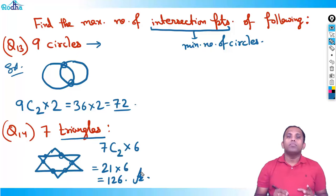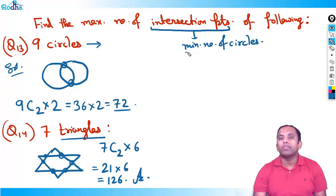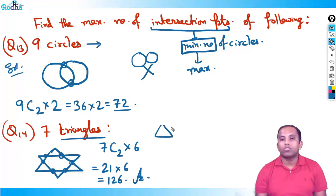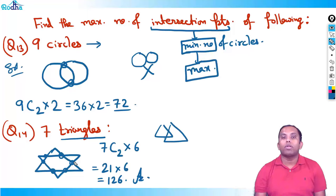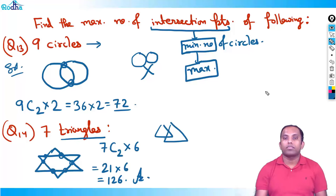General rule for intersection point problems: always go to the minimum number of things required, then maximize that case. Two circles intersect at maximum two points; two triangles intersect at maximum six points. Pick the maximum case — 7C2 × 6 = 126 for seven triangles.